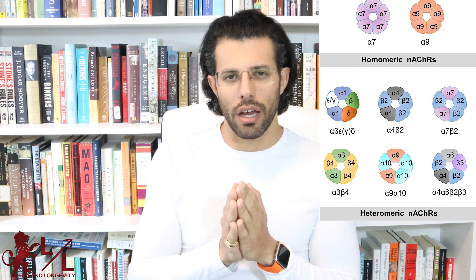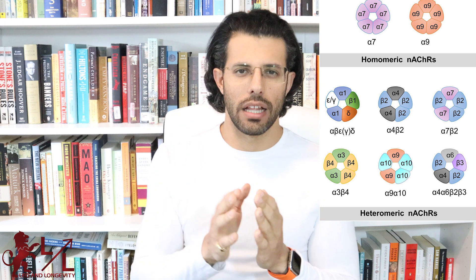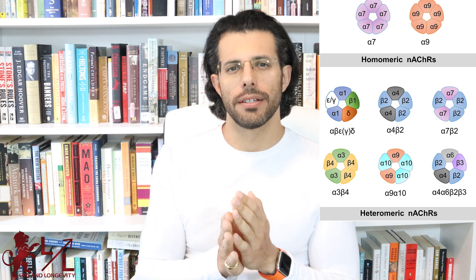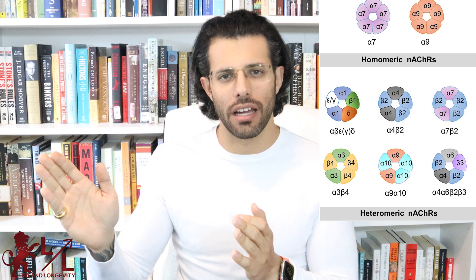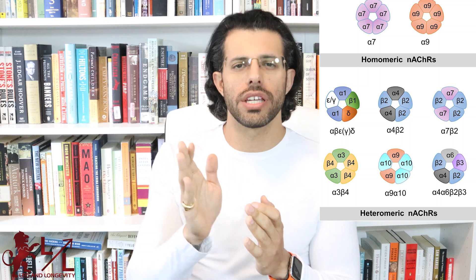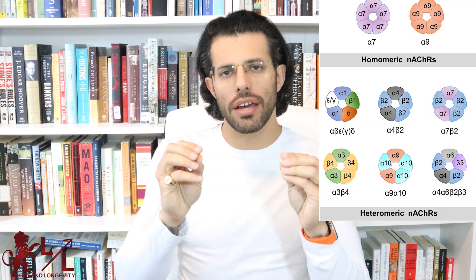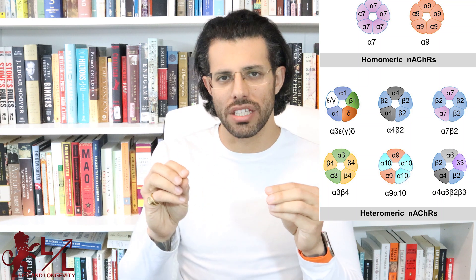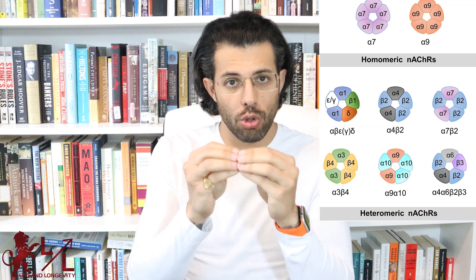The genes, by the way, are called CHRNA for the alpha and CHRNAB for the beta. CHRNA2 to CHRNA9 are expressed in the brain, and CHRNAB2 to CHRNAB4 are also expressed in the brain. So in the brain, you can have an assortment of any of these 17 genes combined together to create an individual receptor.